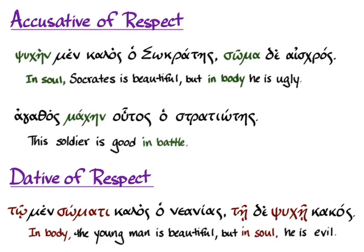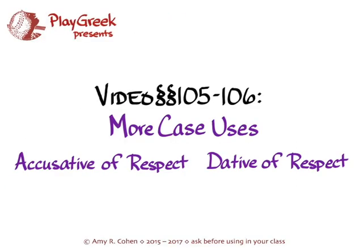If you want to think about the difference between the two cases, you can think of the dative in a more instrumental way — that is, when you're using this measure or that measure, then this statement is true. Whereas in the accusative of respect, it's limiting to a particular thing. But as you can see in English, we express both things in pretty much the same way. And that's what you need to know about the accusative of respect and how it relates to the dative of respect.